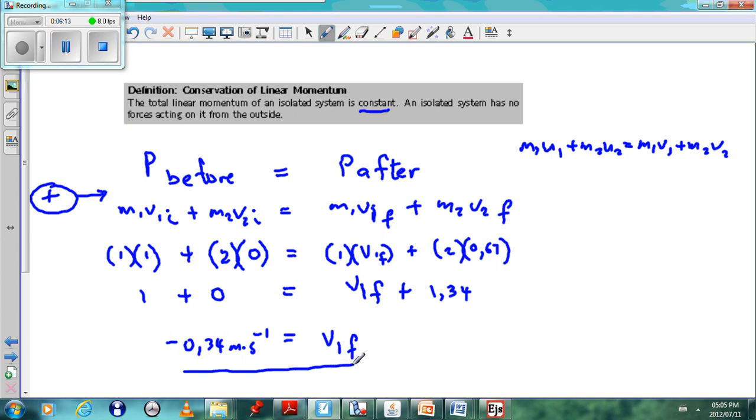What does that mean? V1 final will move at 0.34 meters per second to the left, because we are taking right as positive.